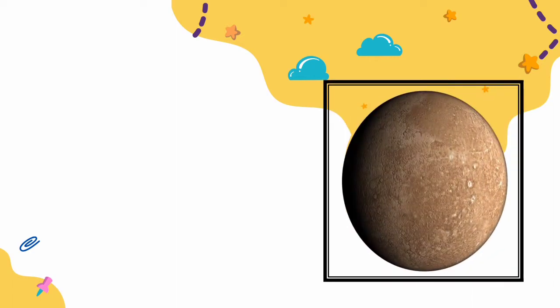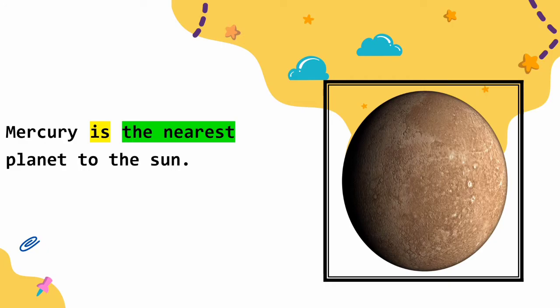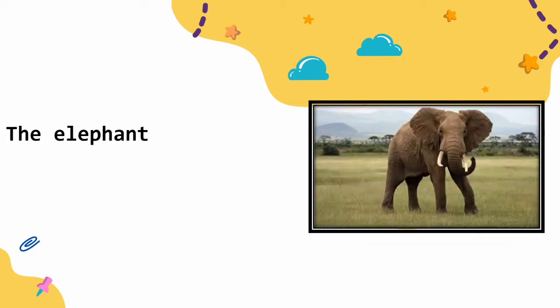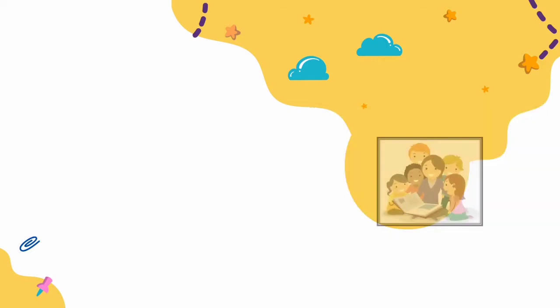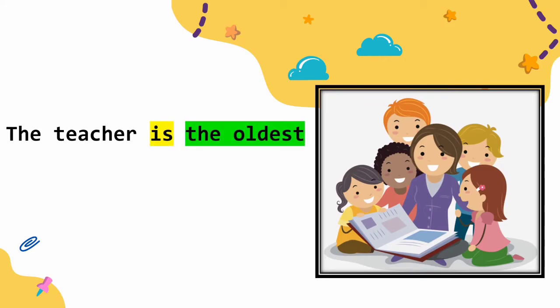This is Mercury. Mercury is the nearest planet to the sun — Merkurius adalah planet yang paling dekat dengan matahari, the nearest — paling dekat. Gajah adalah binatang yang paling besar di dunia — the biggest — paling besar. The teacher is the oldest in the classroom — guru adalah yang paling tua di dalam kelas, the oldest — paling tua.